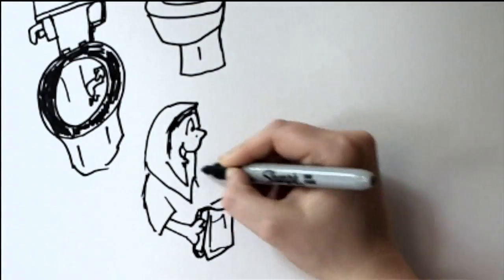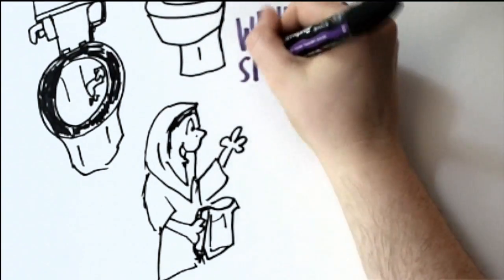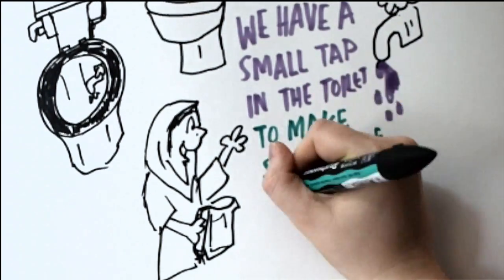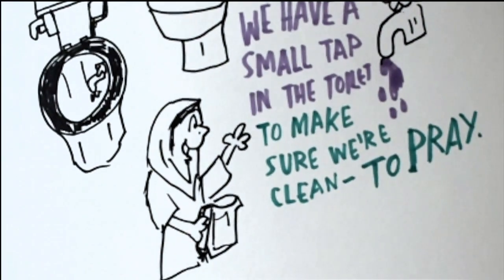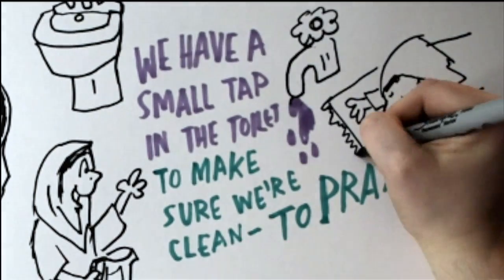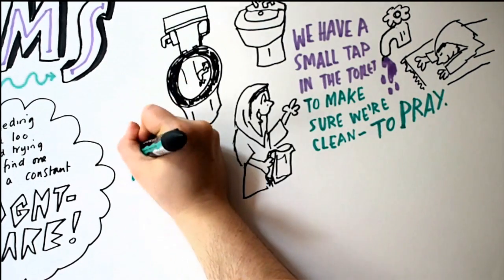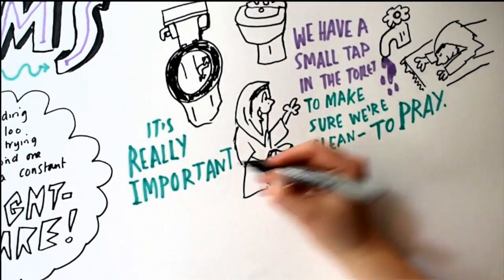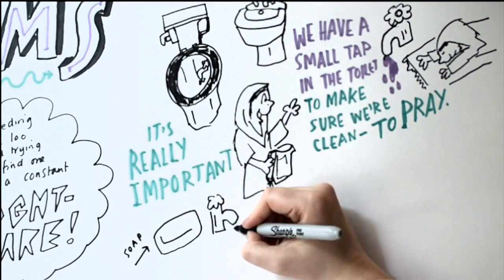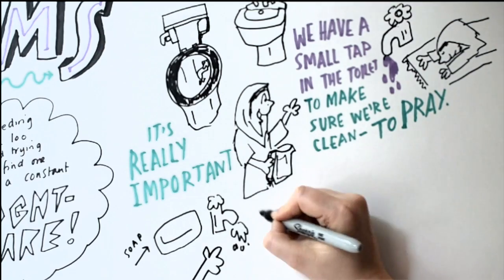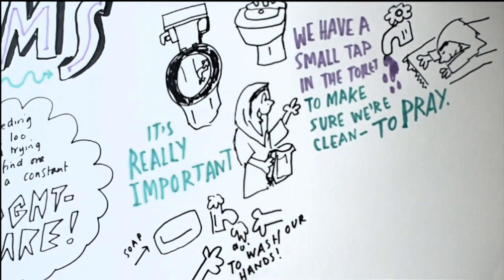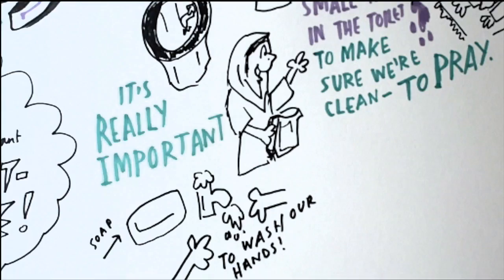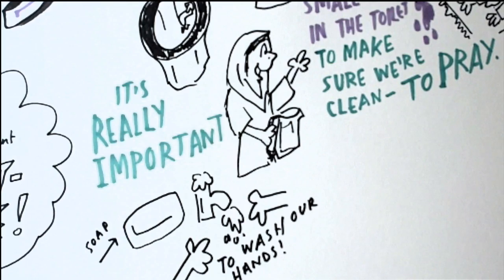Our way of toilet in Egypt is different because we have a small water tap or water pipe inside the toilet that we can use it to clean ourselves, to make sure that we are completely clean. Like this, we could do our evolution and pray because we are Muslim. For that, this is what's the most important thing, is to have toilet with water tap inside. Like this, we could be able to clean ourselves and water and soap in the sink to wash our hands with water and soap.